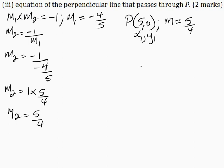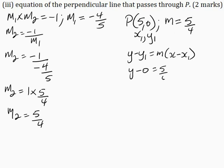I'll use the point-gradient form of the equation of a line to find the equation of the perpendicular line through P. So y minus y1 is equal to m times x minus x1. Substituting x1, y1, and m: y minus 0 is equal to 5 over 4 times open brackets x minus 5. This gives y is equal to 5 over 4 times x, which is 5 over 4 x, minus 5 multiplied by 5 over 4, which is minus 25 over 4.